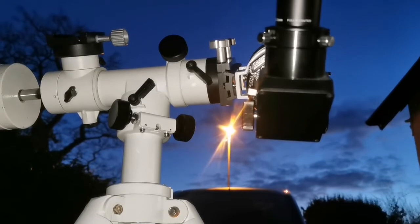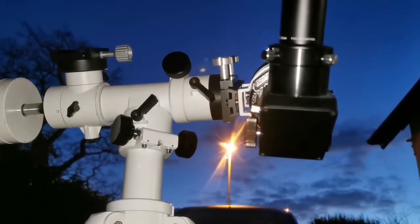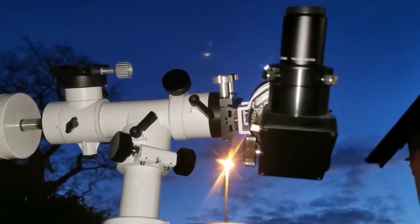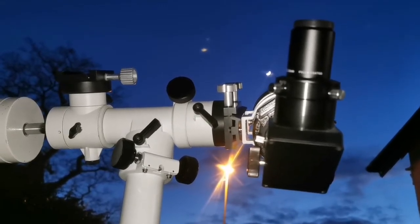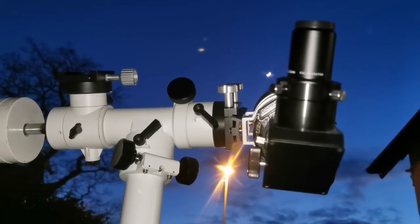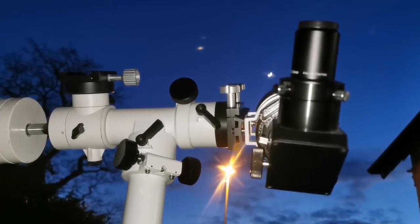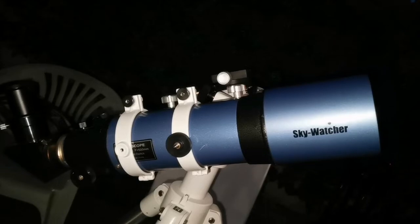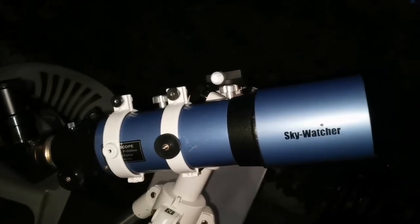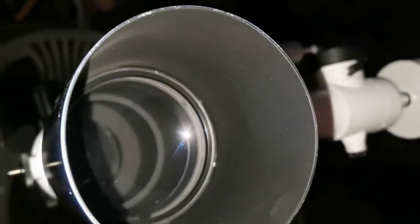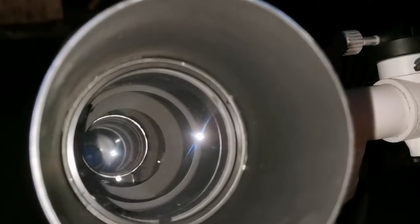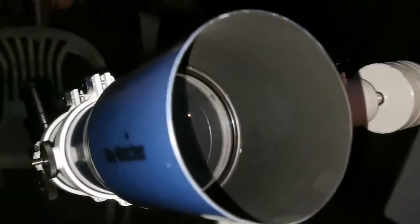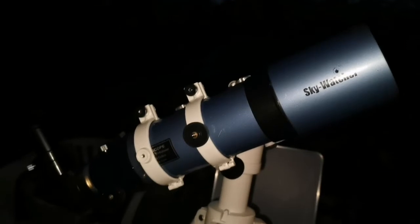I'm using the Skywatcher 102 4-inch, F 500 millimeter telescope. It's an achromatic telescope. This is the telescope itself and this is the objective lens with the baffles inside the tube.